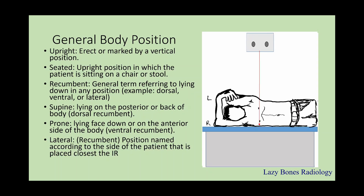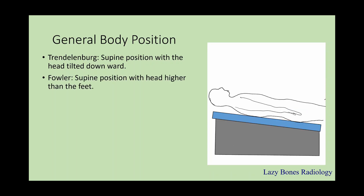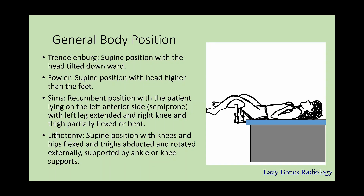Next is lateral recumbent: the position named according to the side where the patient is closest to the IR. For example, this is known as a right lateral position because the right side is down. Trendelenburg: this is supine position but with the head tilted downwards. Fowler position: this is a supine position where the head is higher than the feet. If you think of a sunflower, the head is always up. Sims: a recumbent position with the patient lying on the left anterior side, a semi-prone position with the left leg extended and the right knee and thigh partially flexed. Lithotomy position: a supine position with the knees and hips flexed and the thighs abducted and rotated externally, supported by the knees or ankles.